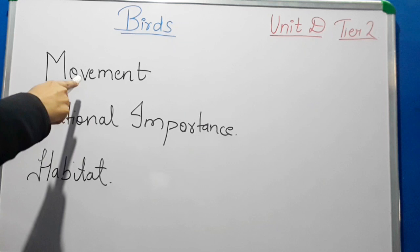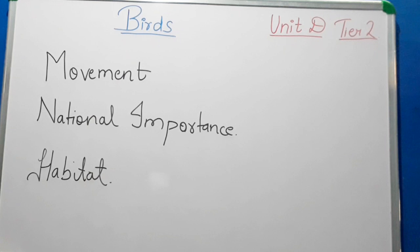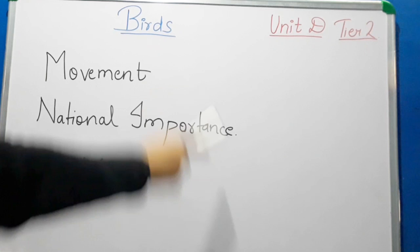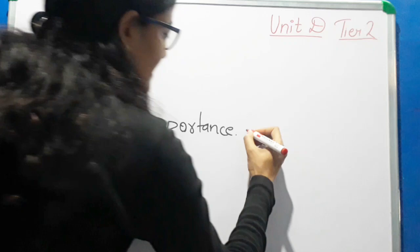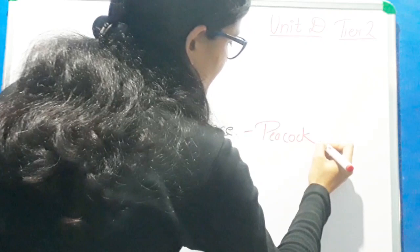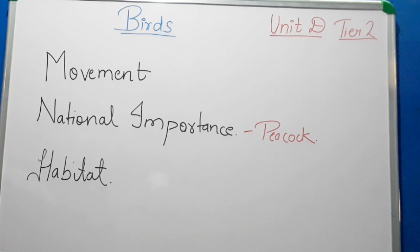Now let's see the movement and national importance of birds. Birds fly with the help of wings and the muscles of their body help the wings to move. The peacock is the national bird of India and the kiwi is the national bird of New Zealand.